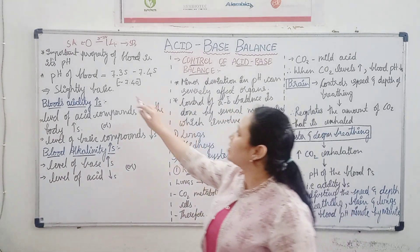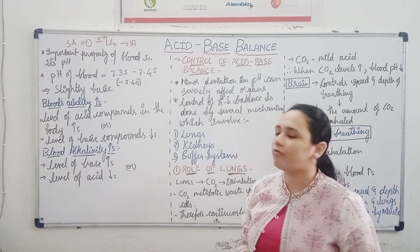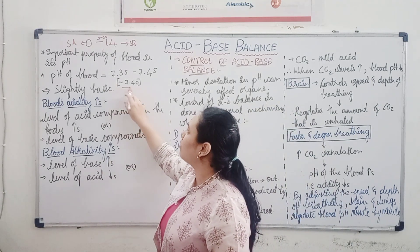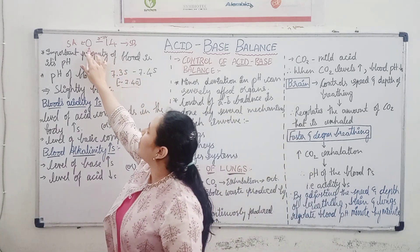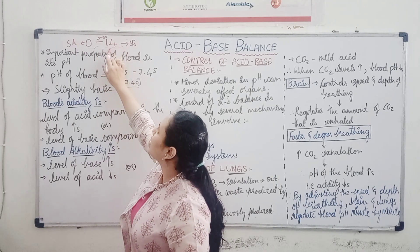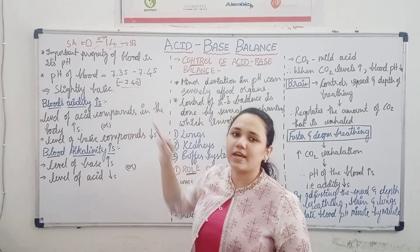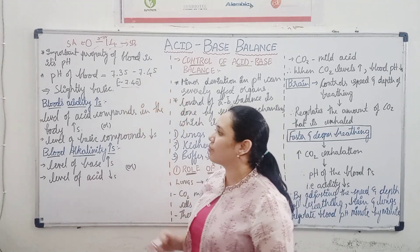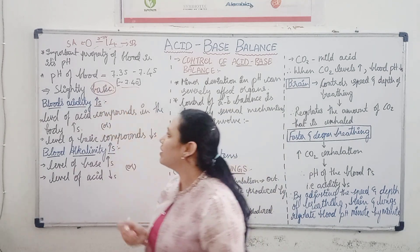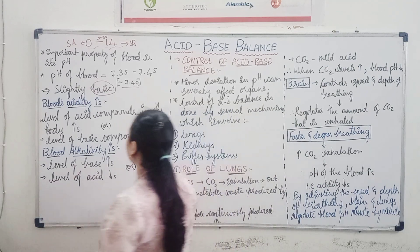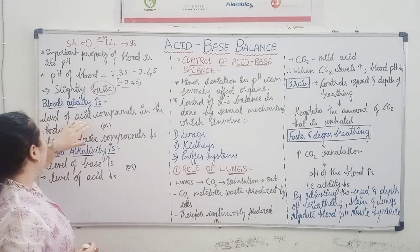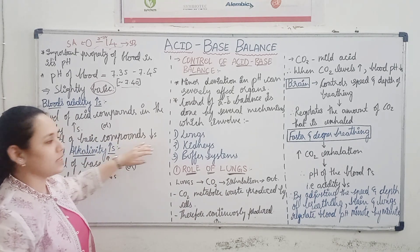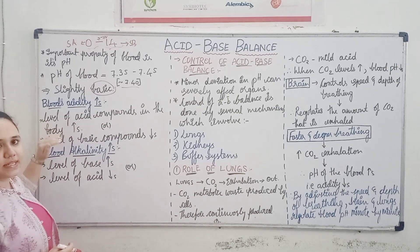Every solution has a specific pH, and similarly our blood also has a specific pH. The pH of blood varies between 7.35 and 7.45, and it is mostly maintained at a value of 7.40. Since 0 to 7 is acidic and 7 to 14 is basic, we can understand that the pH of blood is slightly basic. Our blood's acidity increases in two conditions: either the level of acid compounds in our blood is increased, or the level of basic compounds in the body is decreased.